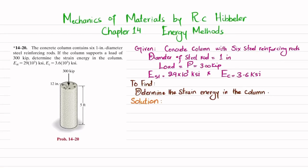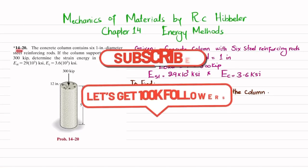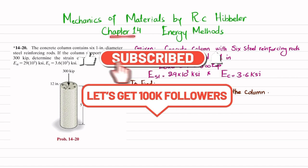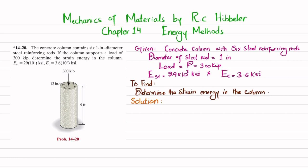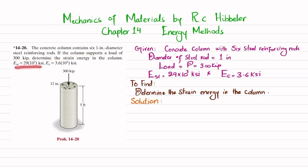Welcome back. In this video we are going to solve problem 14-20, taken from chapter 14 on energy methods in the book Mechanics of Materials by R.C. Hibbeler. The statement is: a concrete column consists of six one-inch diameter steel reinforcing rods. If the column supports a load of 300 kips, determine the strain energy in the column. E of steel is 29×10³ ksi while E of concrete is 3.6×10³ ksi.